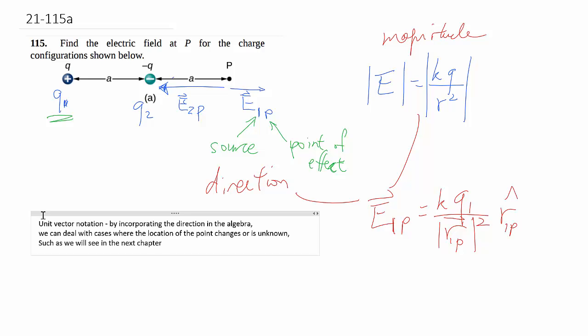The unit vector notation allows us to incorporate the direction into the algebra itself, so that we can deal with cases where the location of the point or the source changes or is unknown. We'll be using approaches like that very soon in our next chapter where we have a continuous distribution of charges instead of discrete points. I'm going to use this question to demonstrate how we'll use the unit vector notation to work out all the signs and directions without having to treat them separately.